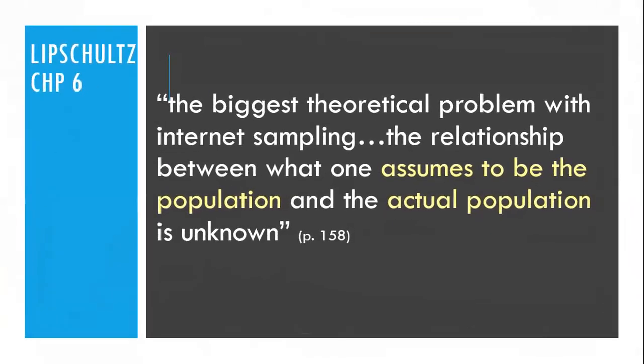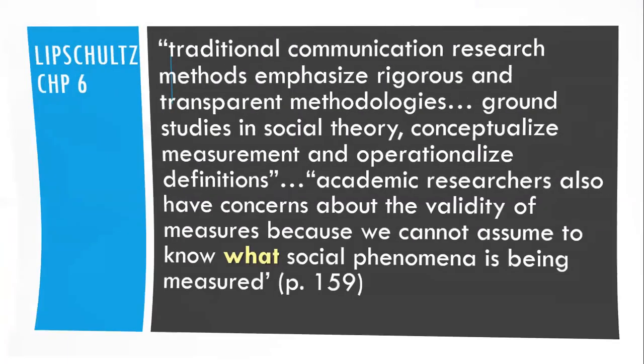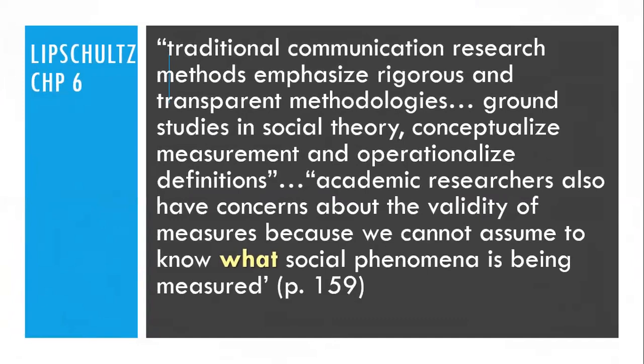The biggest theoretical problem with internet sampling is that the relationship between what one assumes to be the population and the actual population is unknown. You might be sampling what you think is one group with a certain age range, a certain part of the country, certain hobbies and interests, and you are completely wrong — and there's not necessarily a way to know that you are correct or incorrect. Traditional communication research methods emphasize rigorous and transparent methodologies, grounded studies in social theory, conceptualized measurement, and operationalized definitions. Academic researchers also have concerns about the validity of measures because we cannot assume to know what social phenomena is being measured.